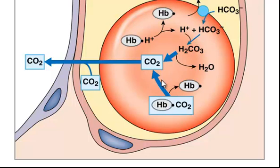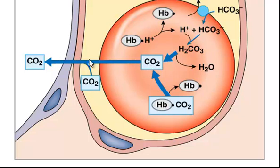Once inside the lungs, the reactions reverse. Bicarbonate will re-enter the red blood cells, and chloride ions will leave. Inside the cell, bicarbonate combines with hydrogen ions to reform carbonic acid, which then dissociates into water and carbon dioxide. That carbon dioxide diffuses out of the red blood cell into the capillary and from the capillary into the alveoli. The carbon dioxide that was bound to hemoglobin also dissociates and similarly diffuses out into the alveoli.